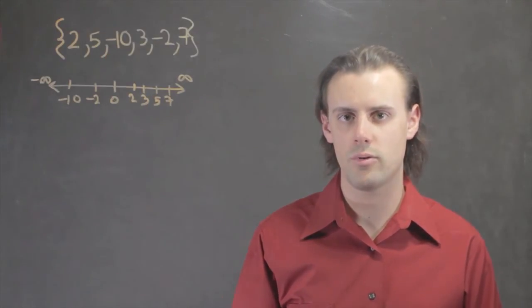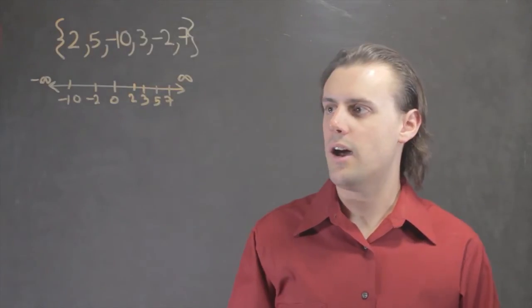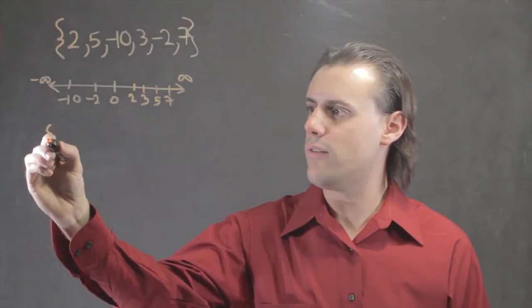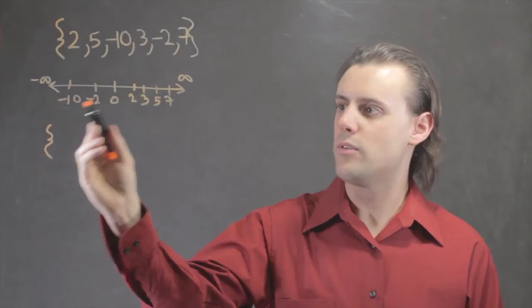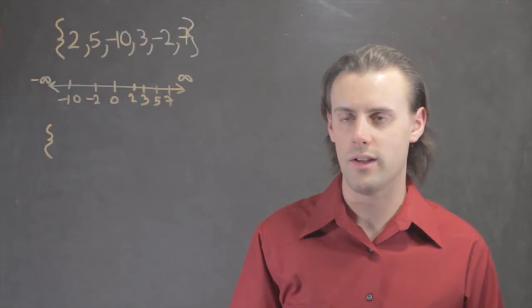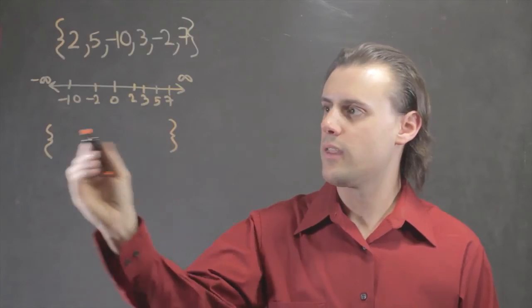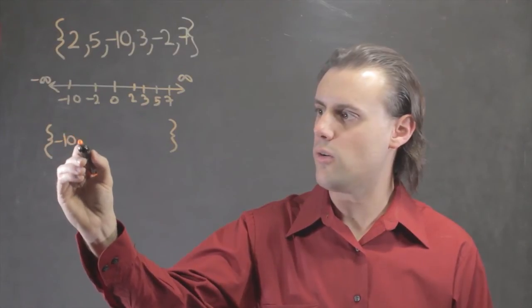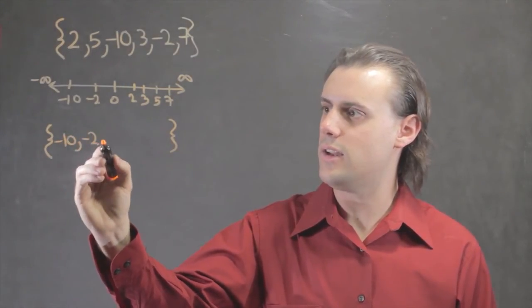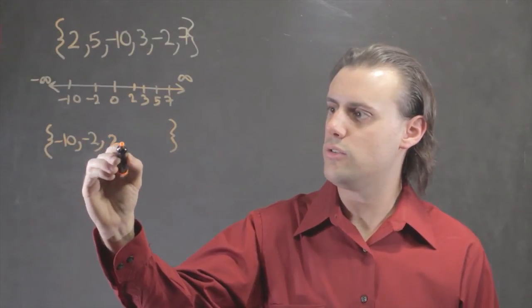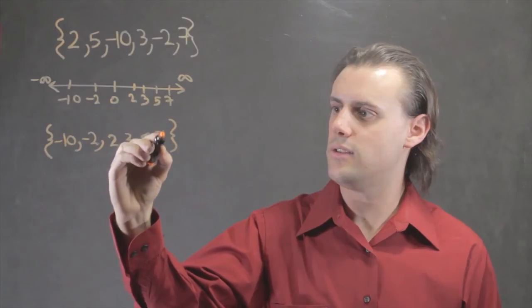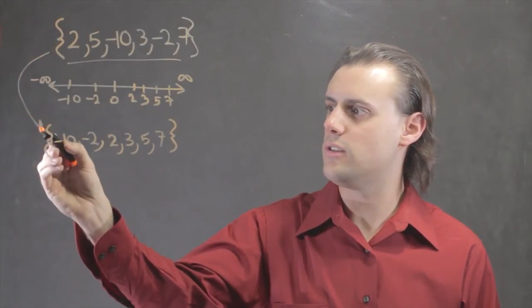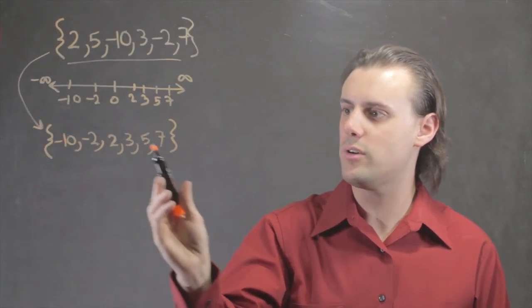Now that I've placed each element of my initially unordered set on the real number line, I can use that information to construct an ordered set. With the most negative number on the left and the most positive on the right, we simply read off the number line and write down our ordered set: negative 10, negative 2, 2, 3, 5, and 7.